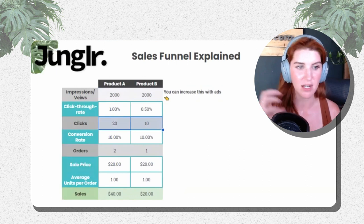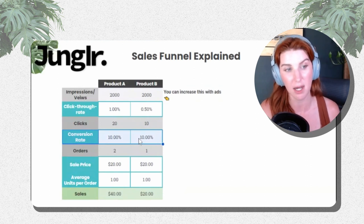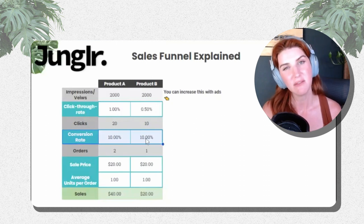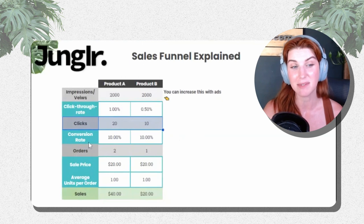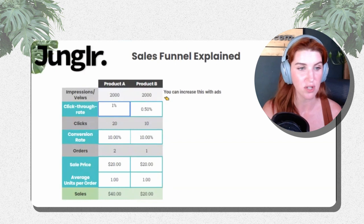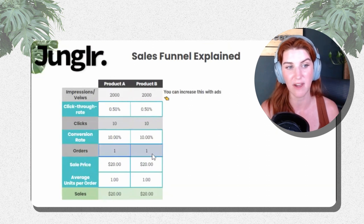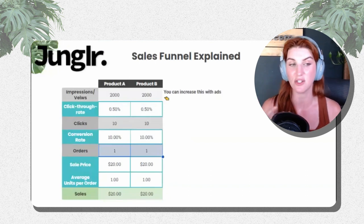Now we get to clicks — people have opted in and they're on the detail page. This is another choke point you can optimize. How many people are viewing the detail page, and our conversion rate determines how many of those will result in an order. Both products here have a conversion rate of 10%. Because Product A is getting twice as many clicks, that results in more orders. At a 0.5% click-through rate with a 10% conversion rate and 10 clicks, both result in one order.